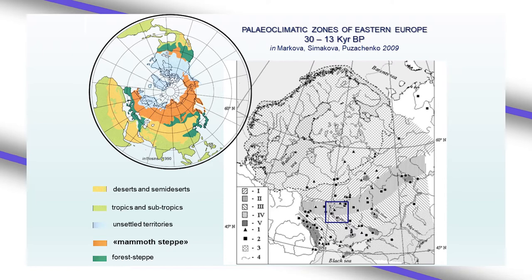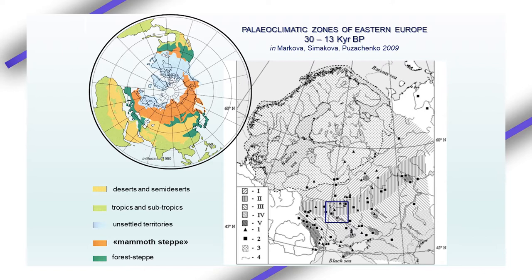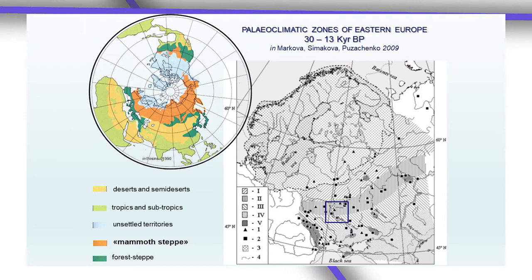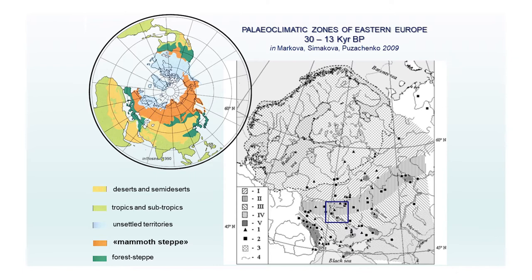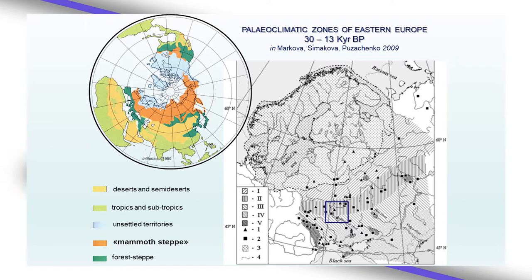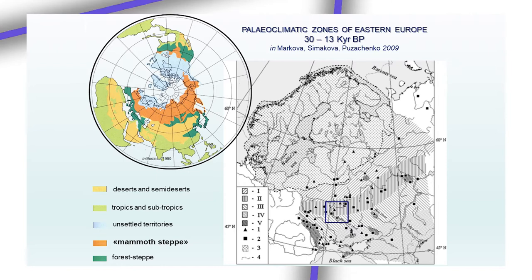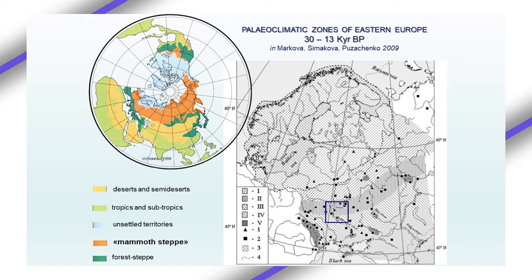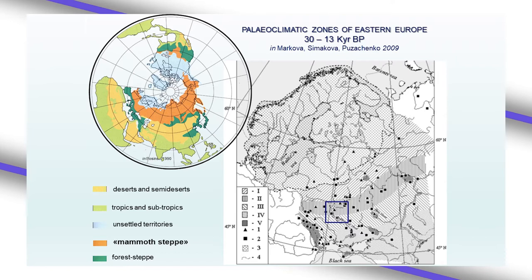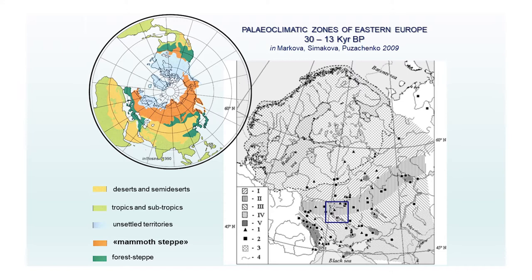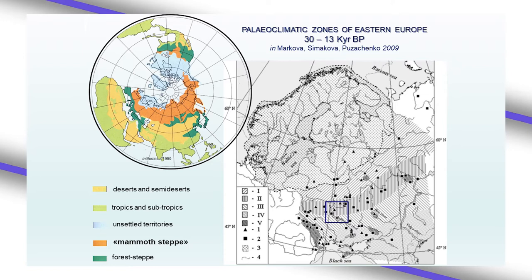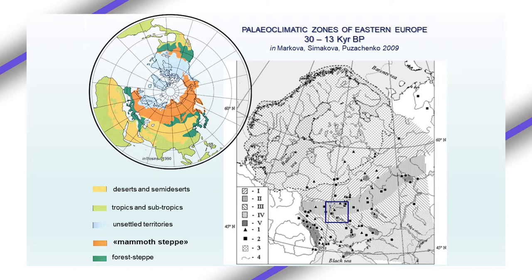If we talk about the climatic zones of Eastern Europe, we can see on this map that the vast territory of Europe and Asia was covered by the so-called Mammoth Steppe. By the works of paleogeographers, we can say that inside this vast Mammoth Steppe there were several geographical regions, especially inside the Eastern European plain: a zone of wet conditions directly behind the glacier, a vast zone of so-called tundra-forest formation, and the more southern periglacial steppe zone.